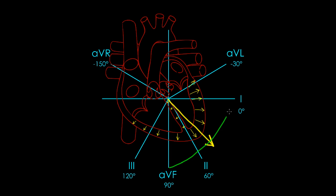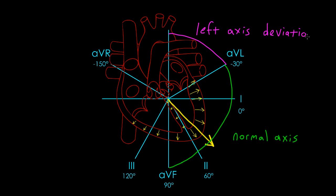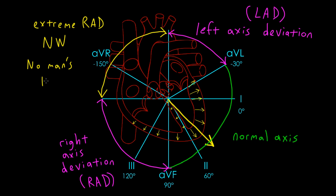A normal QRS axis is defined as falling somewhere between plus 90 degrees down near AVF and negative 30 degrees out near AVL. When your QRS axis falls between negative 30 and negative 90 degrees, we call it left-axis deviation. An axis that falls in the northwest quadrant we sometimes refer to as extreme right-axis deviation, or a northwest axis — sometimes even called no man's land.